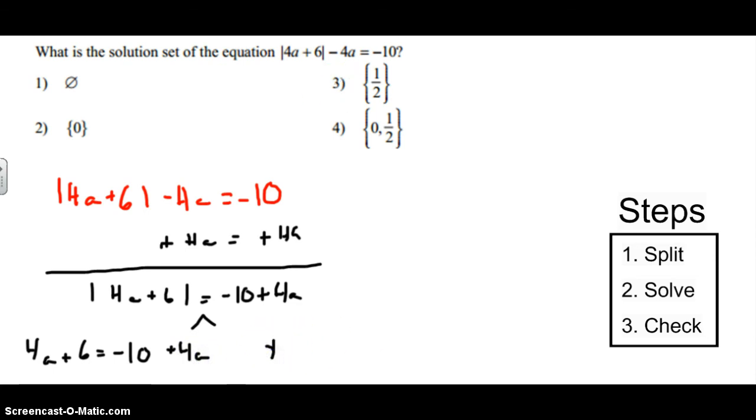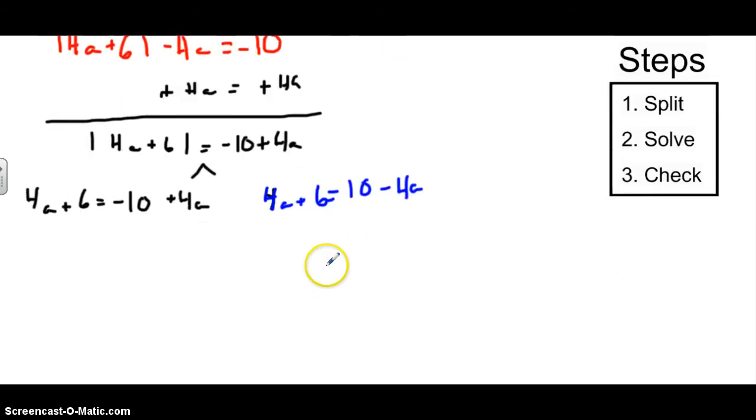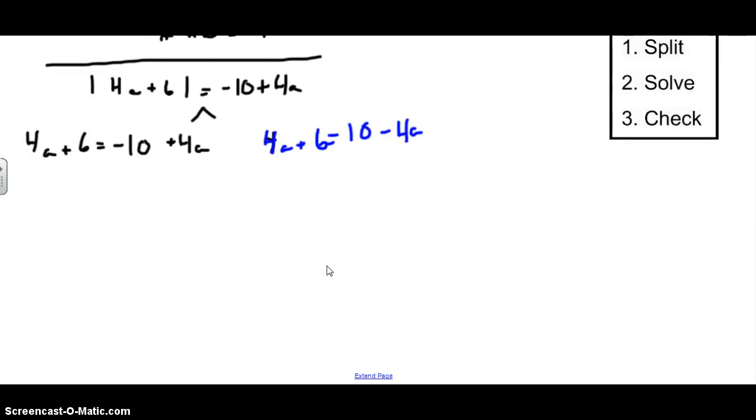And our second one is 4a, oh, let's do it in a different color. 4a plus 6 is equal to, and we change the sign of both of these. So 10 minus 4a. So you look, change the sign, change the sign. All right, now we're going to do some solving here. If you look on this side, I have 4a on both sides. So if I subtract 4a on both sides, these are going to cancel. I get 6 equals negative 10. That doesn't even make sense, so there's no solution here. So this one, there's no solution for.